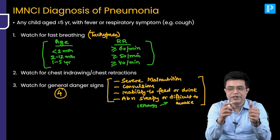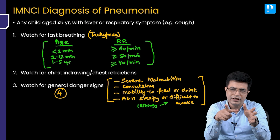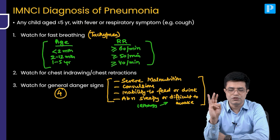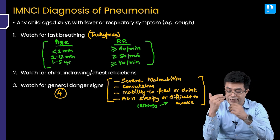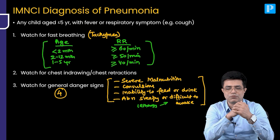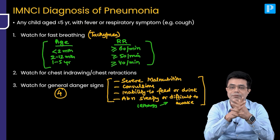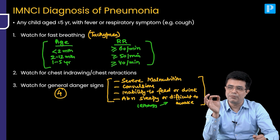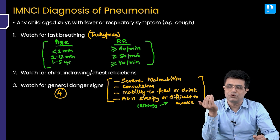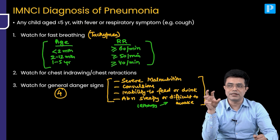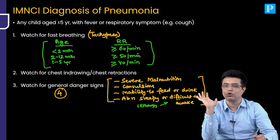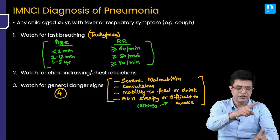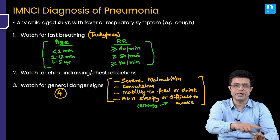So, for any child less than five years of age presenting with fever or cough, first watch for fast breathing, then watch for chest indrawing, then watch for general danger signs, and then make the diagnosis. WHO and the Indian system agree that because pneumonia is the leading cause of death under five, a bit of over-diagnosis is always better than missing a case. The chances of pneumonia directly correlate with fast breathing and chest indrawing.